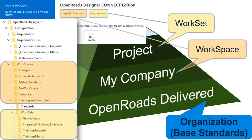In this case we've got examples: Imperial Standards, Metric Standards, and Training and Examples highlighted here. Inside each workspace, as children to it, are worksets. I've expanded out the Training and Examples workspace and we see a subfolder for standards — we'll talk about those later — and the worksets under them, which include different projects: Geotechnical, Integrated Highway Lifecycle, and Training Imperial and Training Metric. So it is a parent-child relationship.